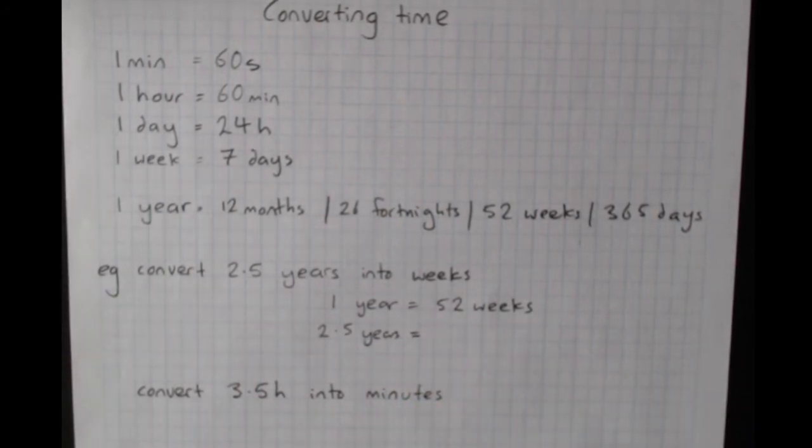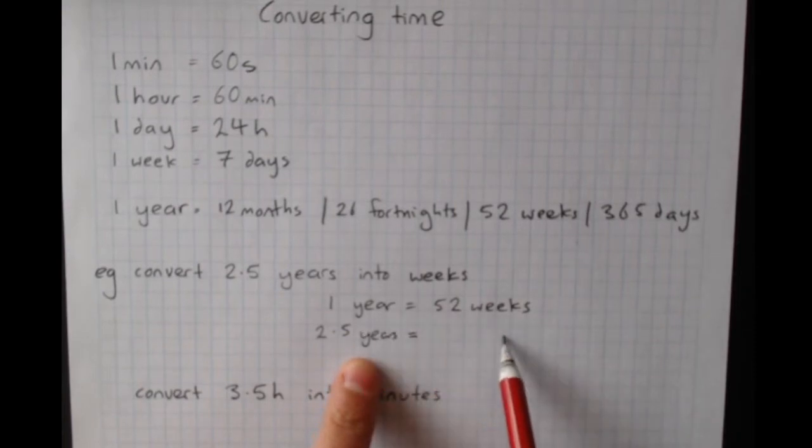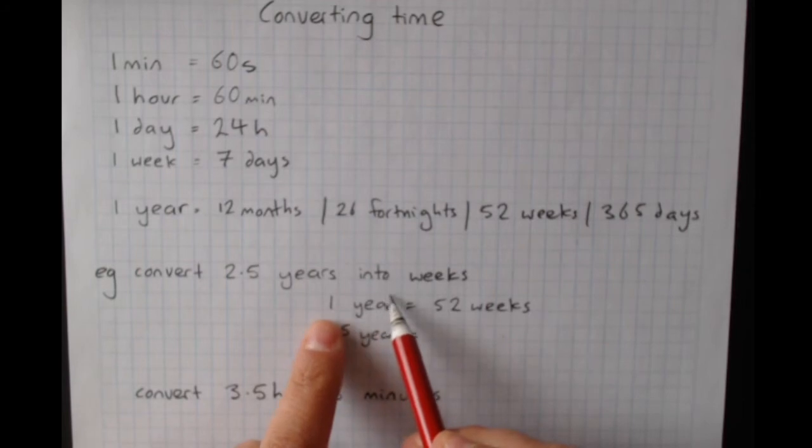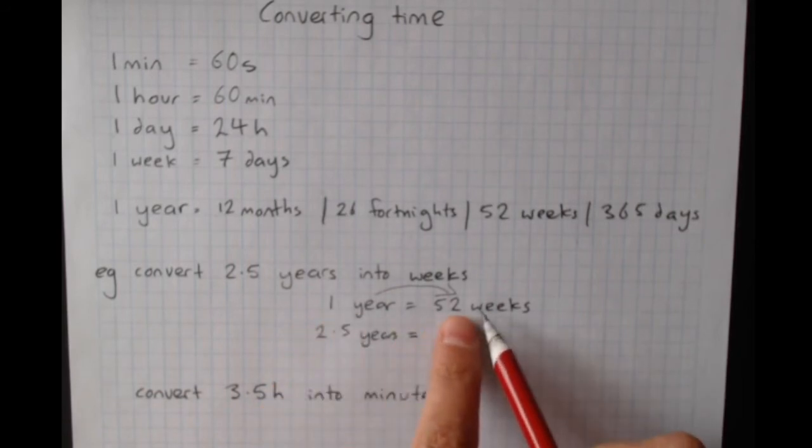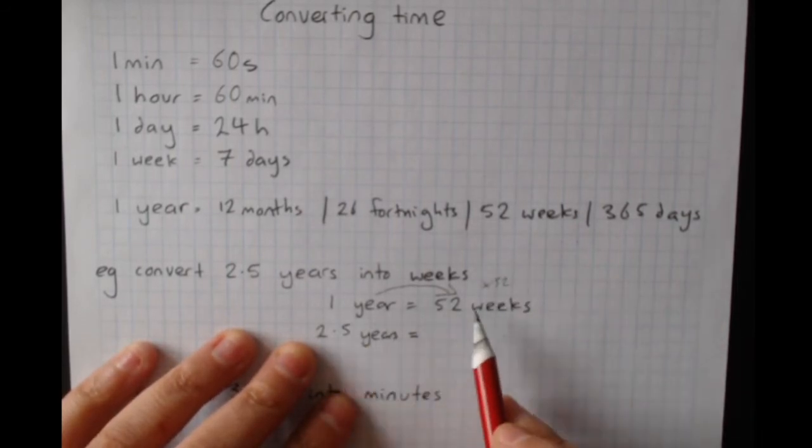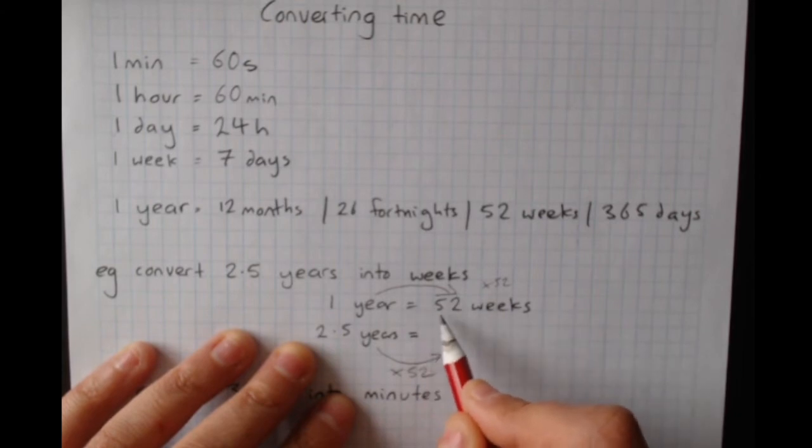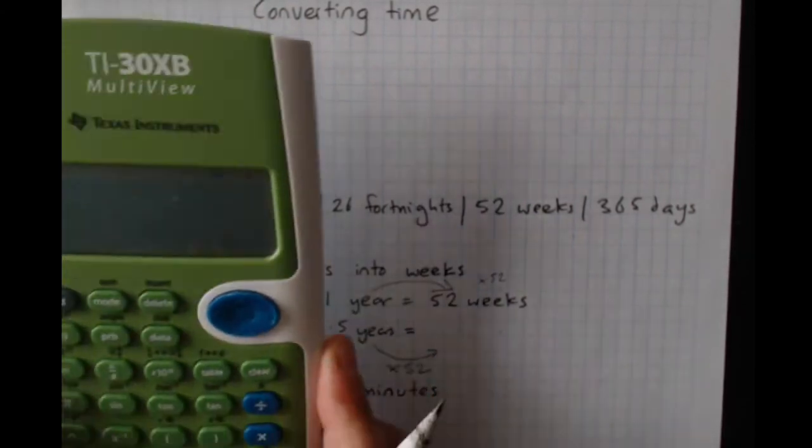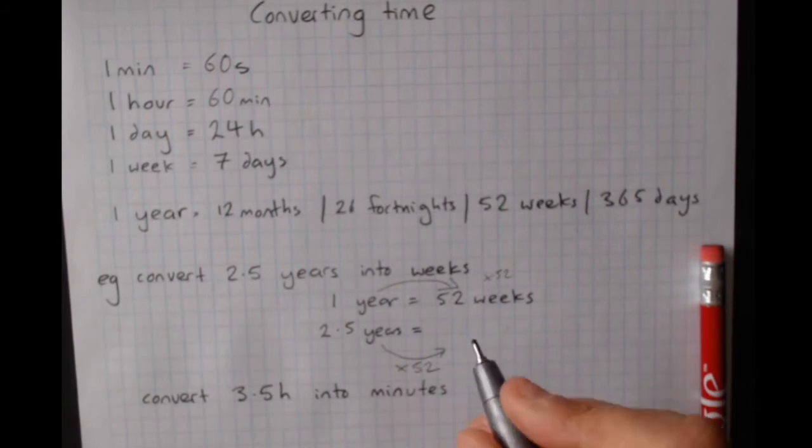And then I find the easiest way to deal with this is to go, here's the side where I know something. I want to go to the side where I don't know something. When I went from one year to 52 weeks, that's a much bigger number. One times this number times 52. 2.5 years is 130 weeks.